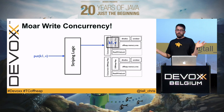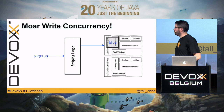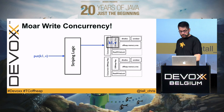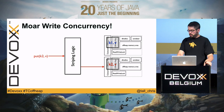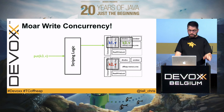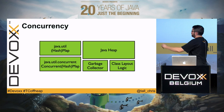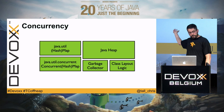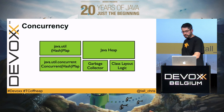We now have a complete solution: a concurrent map, a replacement for the Java heap, a replacement for the garbage collector, and a replacement for class layout logic. We actually have more write concurrency — a second put goes to one map, a third to another.